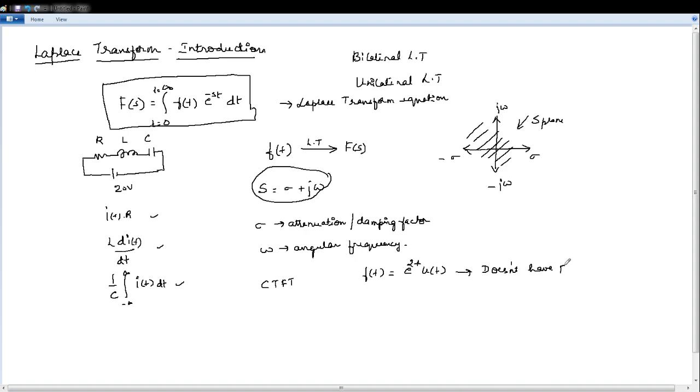This function doesn't have Fourier transform because this e power 2T is a growing exponential. Whereas e power minus 2T is a decaying exponential.